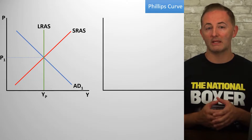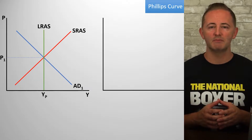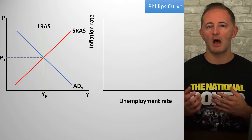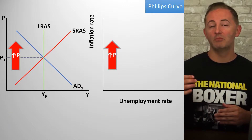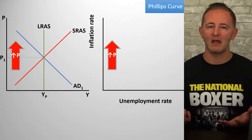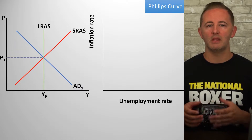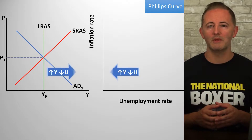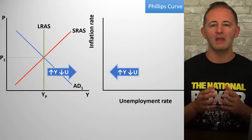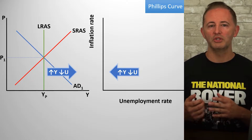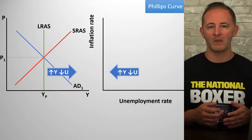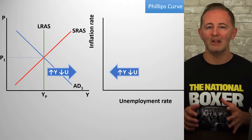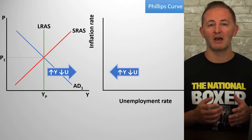On the left we have the ADAS model with the price level and real GDP on the axes. On the right is the Phillips curve model with the inflation rate on the vertical axis and the unemployment rate on the horizontal axis. As we move up higher on both models, we're seeing more inflation and a higher price level. The horizontal axes are real GDP and unemployment, and we should remember from unit 2 that real GDP and unemployment are inversely related. So on the ADAS model, as we move further to the right, real GDP increases and unemployment falls. And the same thing happens on the Phillips curve as we move further to the left. In a lot of ways, these two models are basically mirror images of each other.